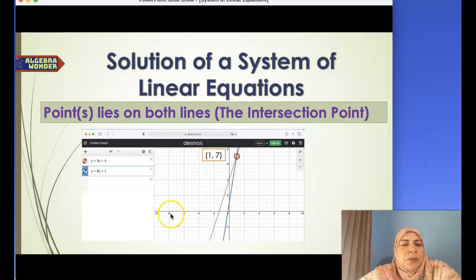Let us verify this. If x is 1, then 3 times 1 is 3, plus 4 equals 7. So (1, 7) lies on this line. Let's check the other line. 6 times 1 is 6, plus 1 equals 7. Yes, y is 7, so it's true. This point makes both equations true and lies on both lines, so this is the solution. The point of intersection for these two lines is the solution.